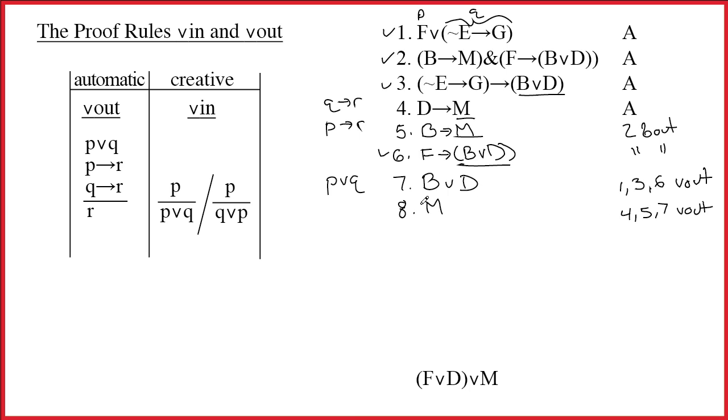Having done that, I'm actually done. Because now I can use my very cool, super powerful wedge in rule. And what I see is that the wedge is the main connective. So to build this, all I need is one half or the other. And I'm done. So line 9 is merely 8 wedge in. Where did that f wedge d come from?